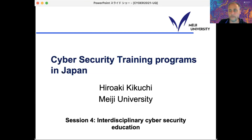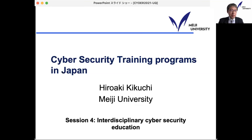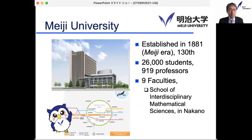Thank you very much. I'm not sure how much time I have, but I'll spend about 10 minutes introducing some cybersecurity training programs in Japan. My background is at Meiji University's School of Interdisciplinary Mathematical Sciences — a kind of computer science department. Although the name is interdisciplinary, according to the definitions from Ryan's presentation, it's actually disjoint multidisciplinary, because it's really hard to put together and collaborate with different specialties. I've been involved with the JPCERT Coordination Center, and I've realized there's a gap between the industry and universities in cybersecurity.